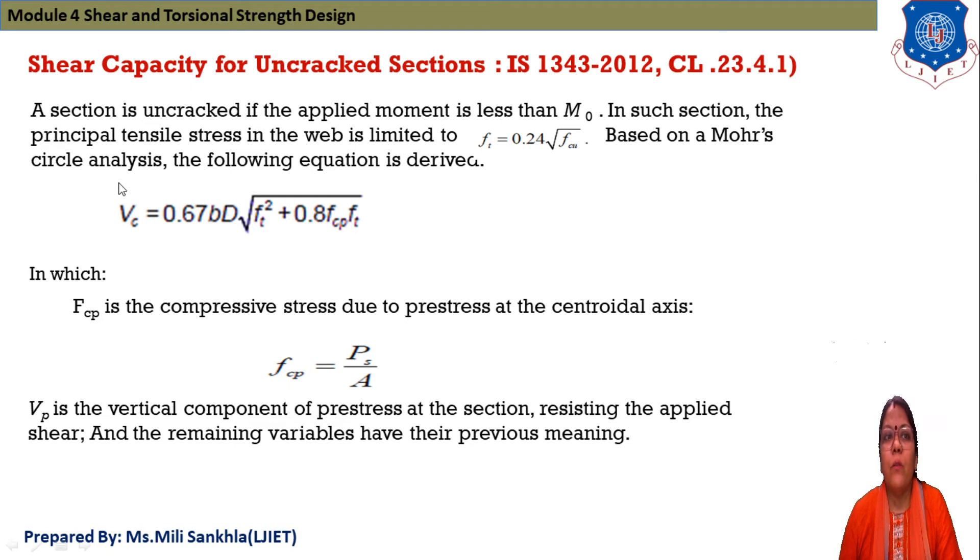Based on Mohr circle analysis, the equation is VC is equal to 0.67 B into D under root of FT square plus 0.8 FCP into FT. What is FCP? FCP is the compressive stress due to prestress at centroidal axis. And FCP we find out PS divided by area. And VP is equal to vertical component of prestress at section, resisting the applied shear and remaining variable have previous meaning.